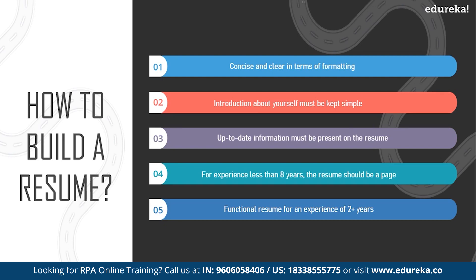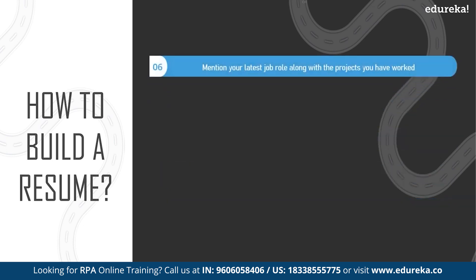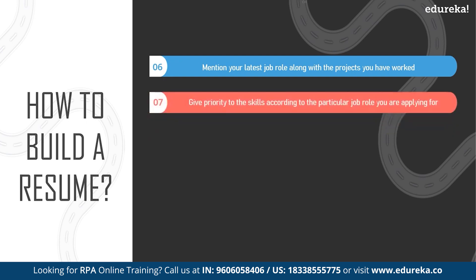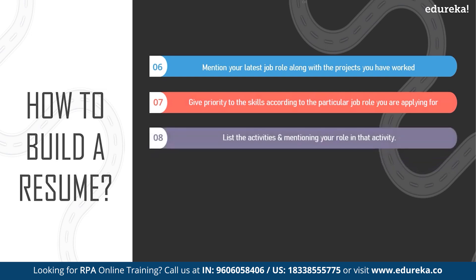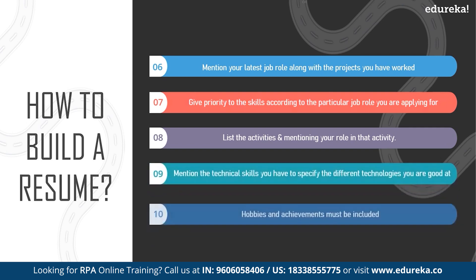It's better to mention projects related to the job role you're applying for. If you're an experienced professional, mention your latest job role along with the projects worked on in the previous organization. If you're a fresher, justify your role in the projects you mention. Give priority to skills according to the particular job role you're applying for and list the activities along with your role in those activities.